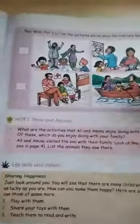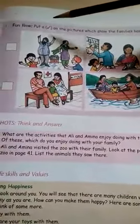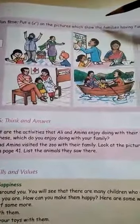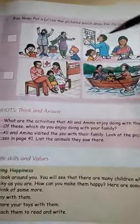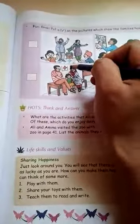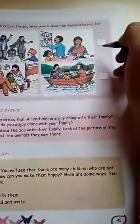Now let us do this one. Fun time, put a tick on the pictures which shows the family is having fun. Now let us choose, let us see which family is enjoying. So in the first picture what you can see, these people along with the parents and children, they are enjoying, they are listening to the music. So this family is enjoying, give a tick mark here.